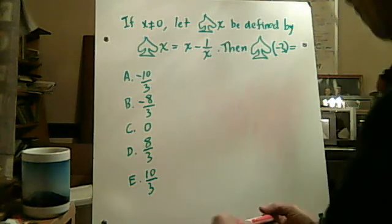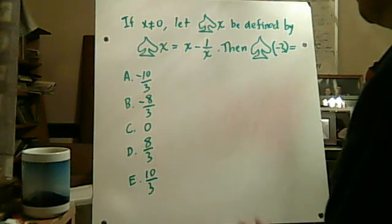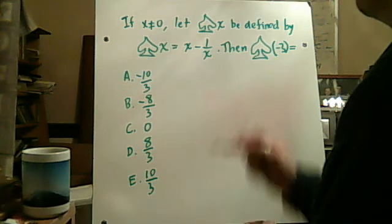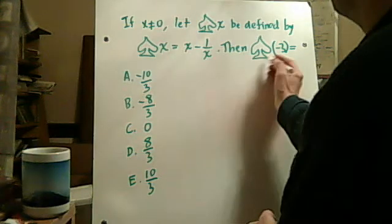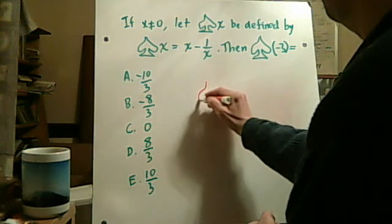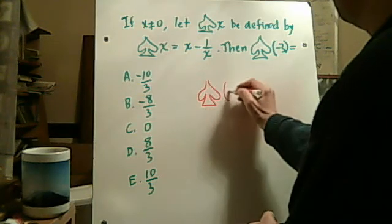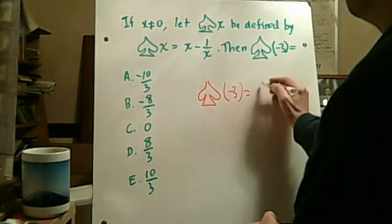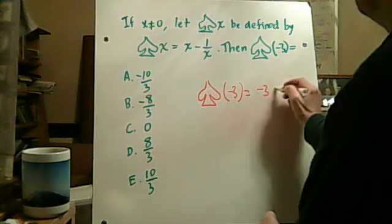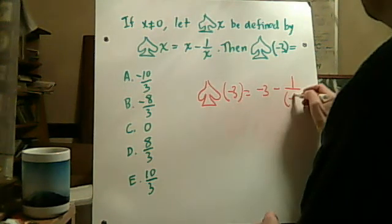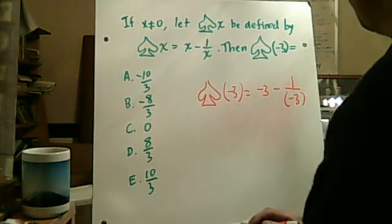Okay, this doesn't look very hard because if I want the spade of negative 3, it's really just a matter of plugging it in to this idea: negative 3 minus 1 over negative 3.